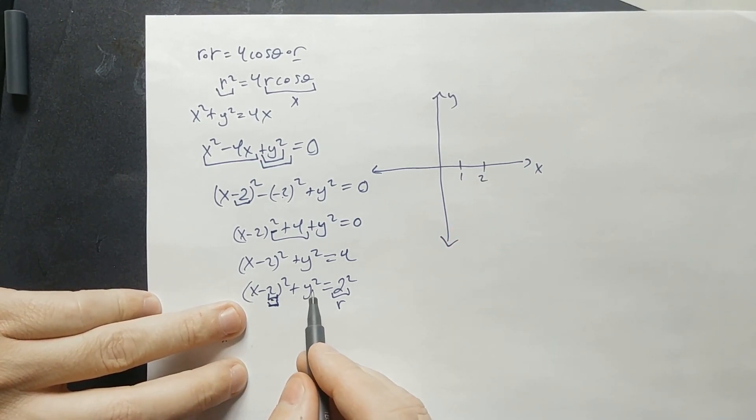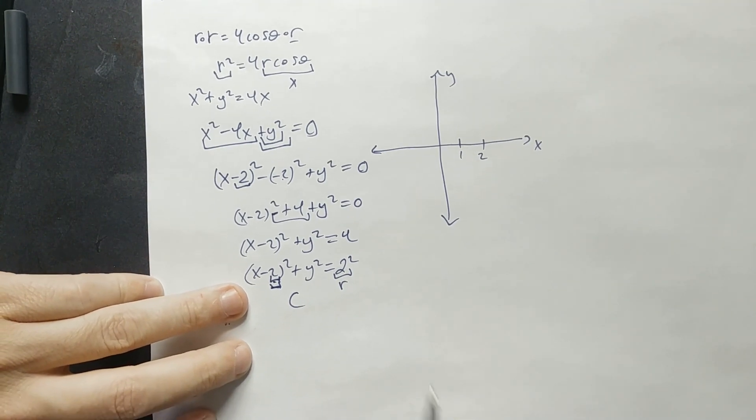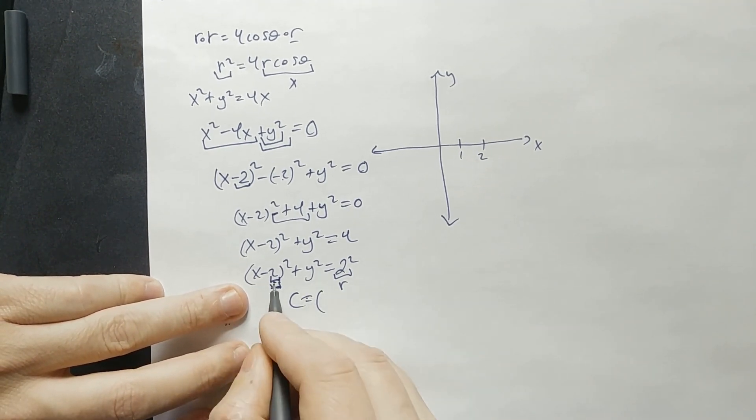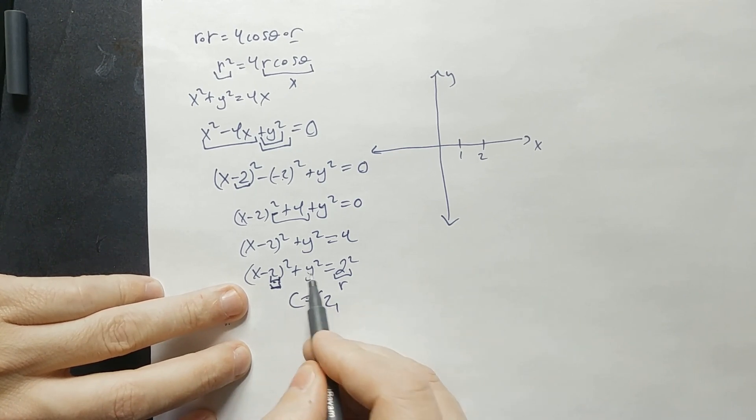Because y is just y squared, that means it's not shifted vertically. So the center point, in other words, the center of the circle would be the point that looks like this. You take the 2 from here without the negative, just a positive 2. And you take the zero from here.